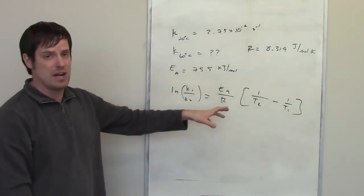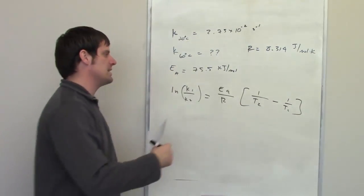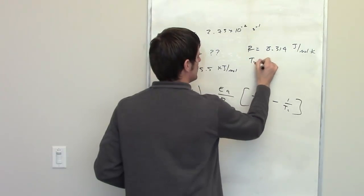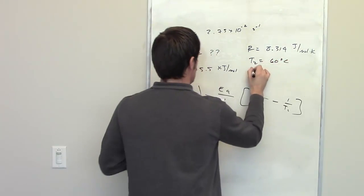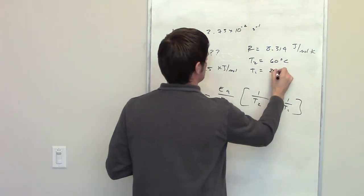Now, I realize there are different forms of the ideal gas constant. When you're doing this, or using this equation, you have to use that ideal gas constant. Once again, T2 is equal to 60 degrees Celsius, and T1 is equal to 20 degrees Celsius.